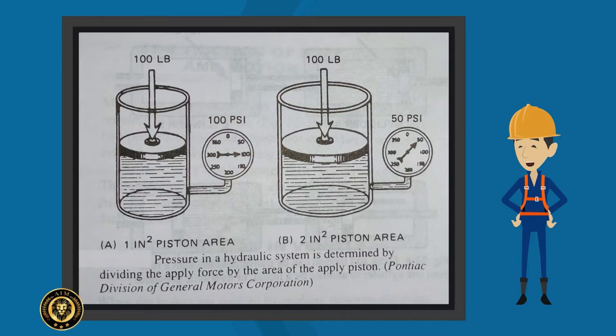The size of the piston also determines pressure. In figure, the piston area is increased to 2 square inches. When the same force of 100 pounds is applied over double the area, the resulting pressure is only 50 psi that is 345 kilopascal which becomes just the half.